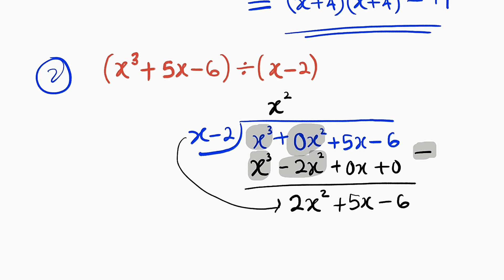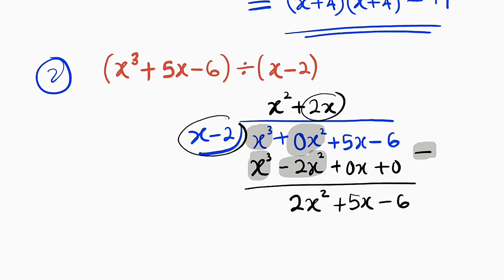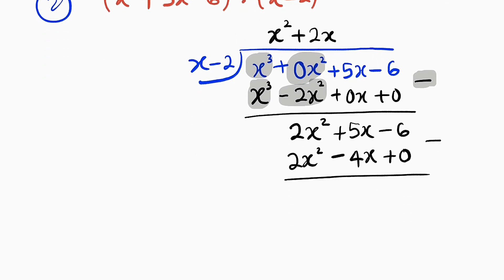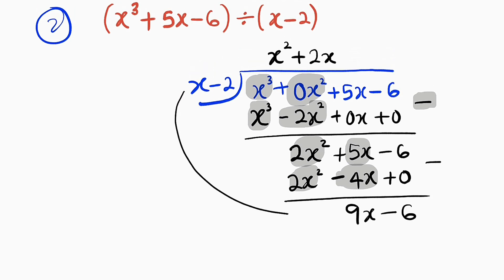Then 5x minus 0 is 5x, and negative 6 minus 0 is negative 6. We continue. x into 2x squared gives us 2x — write plus 2x on top. Take 2x and multiply by the divisor: 2x times x gives 2x squared, and 2x times negative 2 gives negative 4x. Subtract: 2x squared minus 2x squared is 0. Then 5x minus negative 4x gives 5x plus 4x which is 9x. Then minus 6 minus 0 is minus 6. Repeat the same process: x into 9x goes 9 times, so we write plus 9 on top.